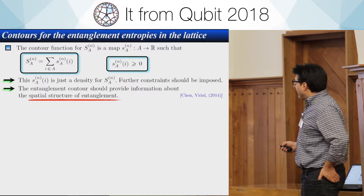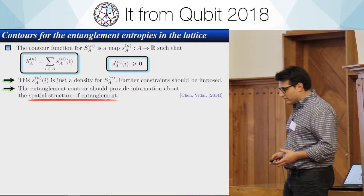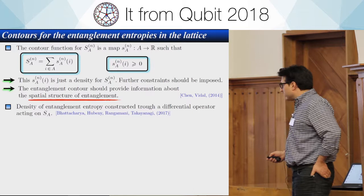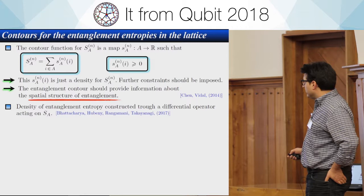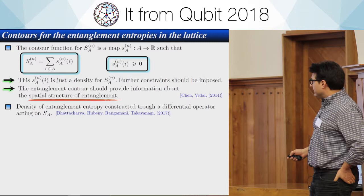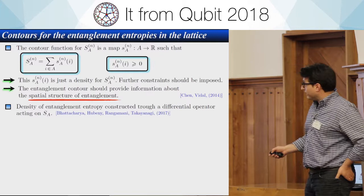These two requirements define what you can call a density for entanglement. If you want to specify this quantity better, you need to impose additional constraints. The idea of studying this quantity is to understand whether there is some special structure of entanglement.